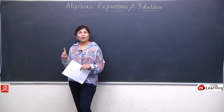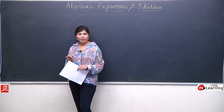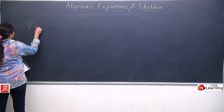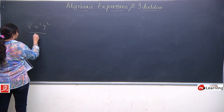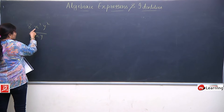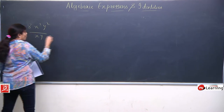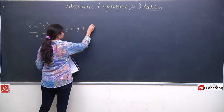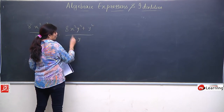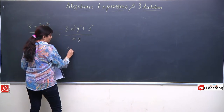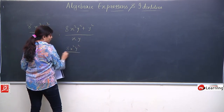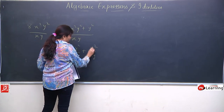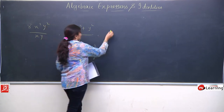Abhi humne naye divide ka question dekha. Pehle humne do monomial liye — numerator bhi monomial tha, denominator bhi monomial tha. Us ke baad humne ek aur example liya jahan binomial tha, aur humne method of separation se solve kiya: x²y² upon xy, plus y² upon xy. Is ke baad trinomial type kuch liya — notice karne wali cheez yeh hai ki upar numerator changes aaya, but denominator monomial tha, matlab single term tha.